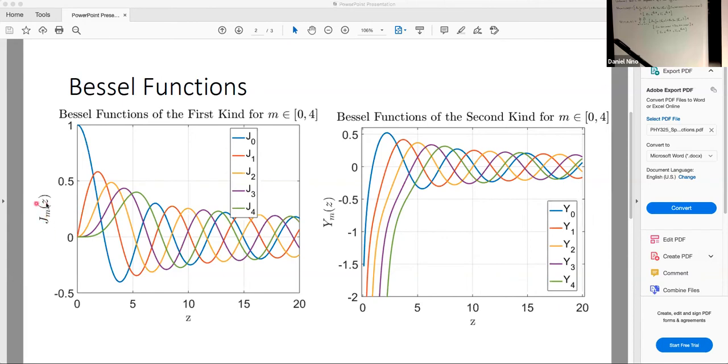So jm of z, where z is the general argument. You can see it has this oscillatory nature for each order. So the blue curve here corresponds to the Bessel function of the first kind of 0th order when m is equal to 0. And it kind of looks like a decaying oscillation, even though it doesn't decay all the way.